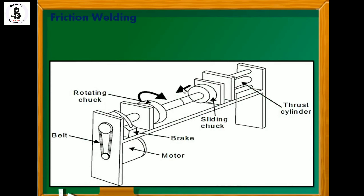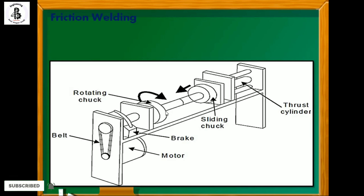As you can see, it looks like a lathe machine. Here there is a motor, which is connected with a belt drive mechanism. That drive mechanism is connected with a rotating chuck. In the chuck, the workpiece is held. On the other end there is a sliding chuck which is connected with a thrust cylinder. By the application of thrust force, this sliding chuck slides along the bed of the machine.